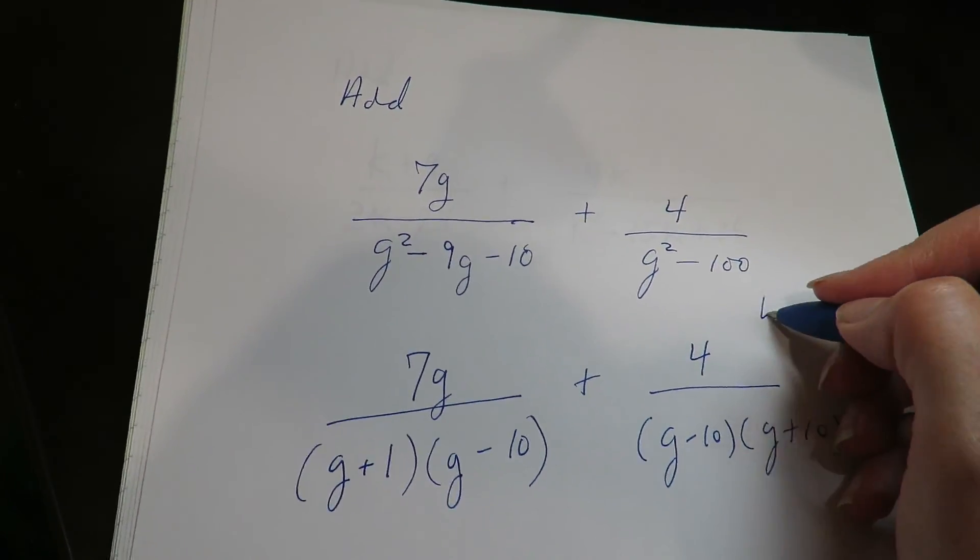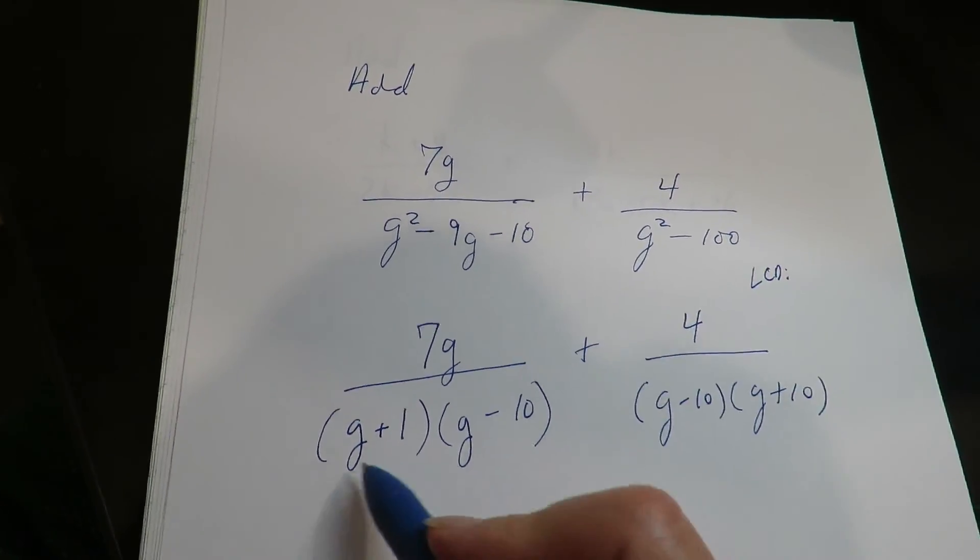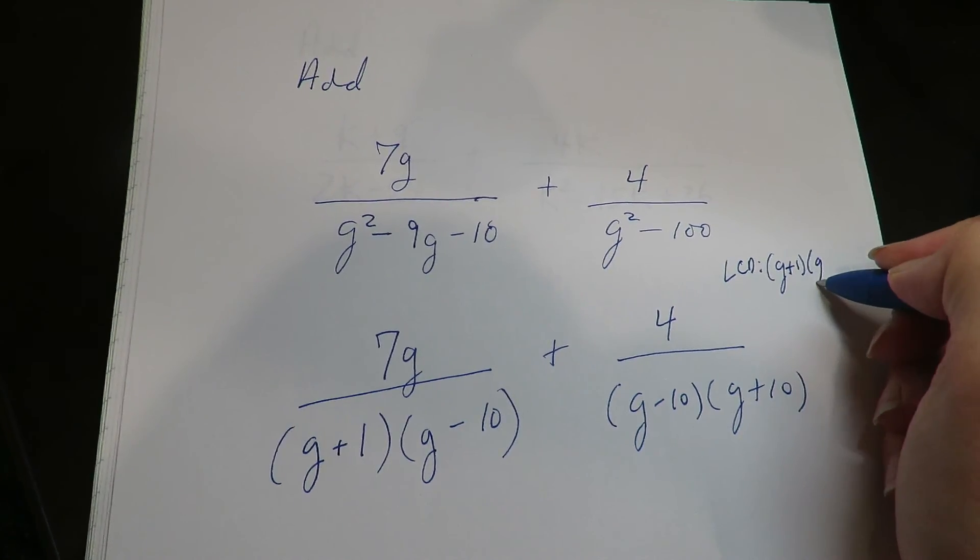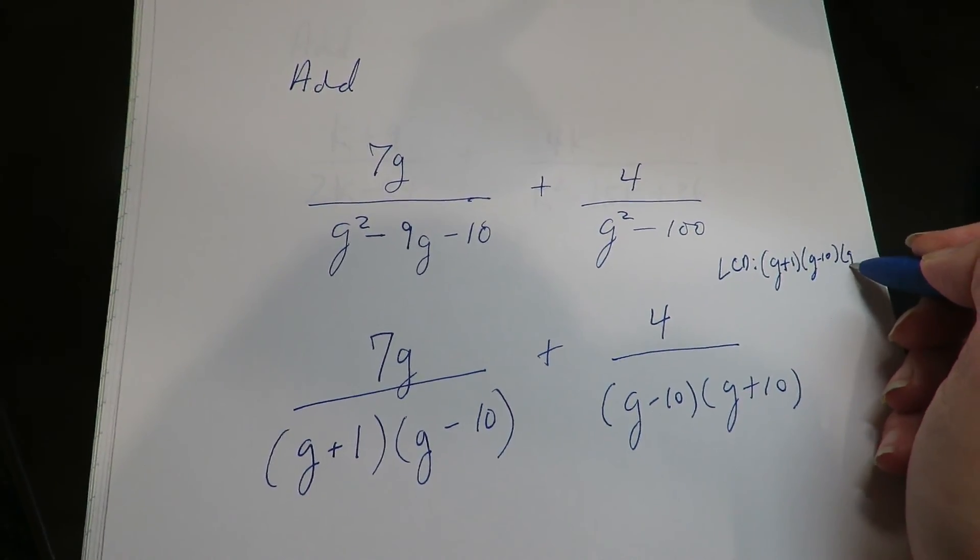All right, so the LCD for this guy is going to be G plus 1, G minus 10, G plus 10.